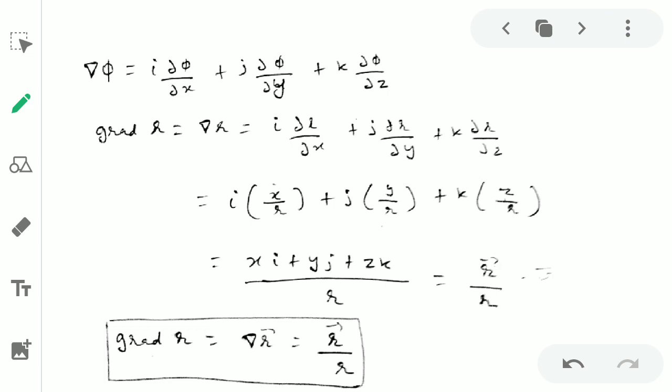So now I will back substitute the given expression in the gradient. Gradient of φ is i(∂φ/∂x) + j(∂φ/∂y) + k(∂φ/∂z).